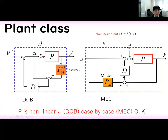Next, we show the case for non-linear systems. When the plant is given as a non-linear system, it is difficult to make an inverse system, so whether Disturbance Observer works is case by case. On the other hand, in the case of MEC, the plant model is given directly — this is not the inverse model — so it is okay to use MEC for non-linear systems.